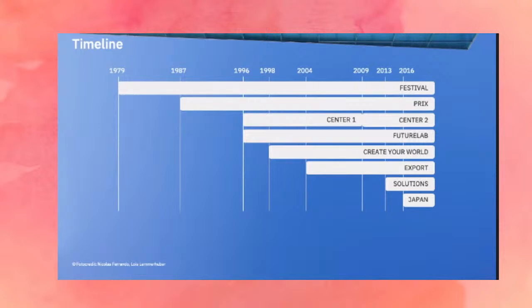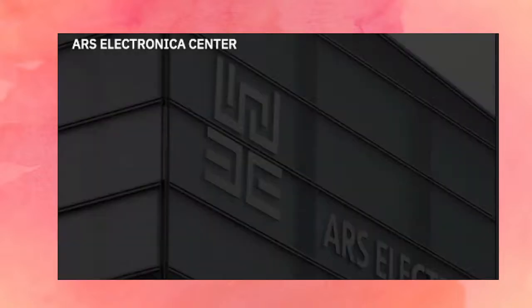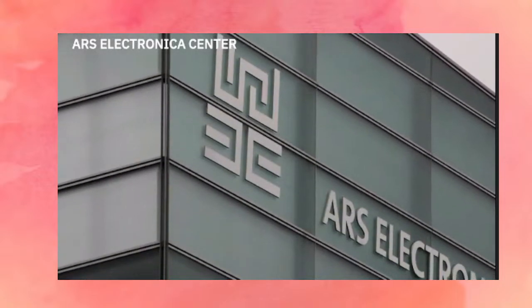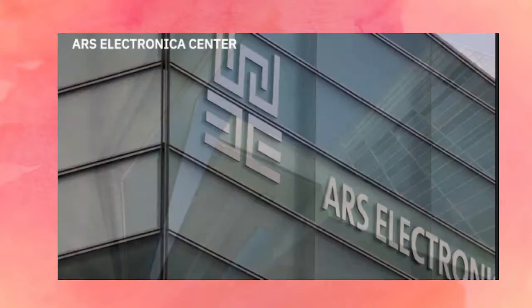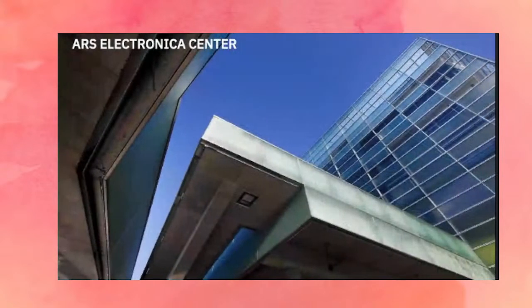Another division is called Export — collaborations with other cultural institutions worldwide. Solutions is a division connected to industry: applied research, so to speak. There is also, since a couple of years, a connection to the Japanese media art festival, which is also one of the oldest ones. Here you can see a couple of images of the Ars Electronica Center, subtitled Museum of the Future. These exhibitions are constantly updated, so if you have the possibility to go there, you will probably see a totally different exhibition each time.